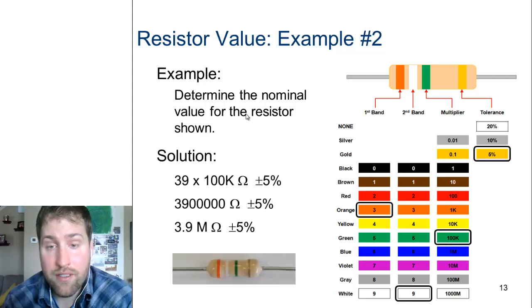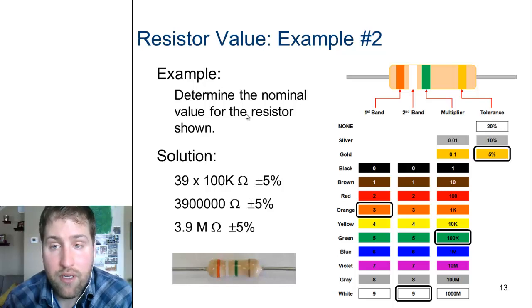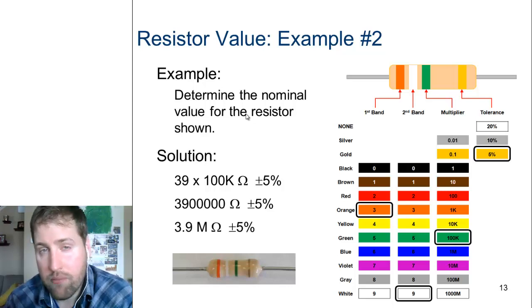How'd you do in this example? Remember, the orange represents 3, the white represents 9, that multiplier of green is 100,000 - 100k - with a plus or minus tolerance of 5%. So we say 39 times 100,000, which gives us a final resistance of 3.9 million ohms with a plus or minus 5%.